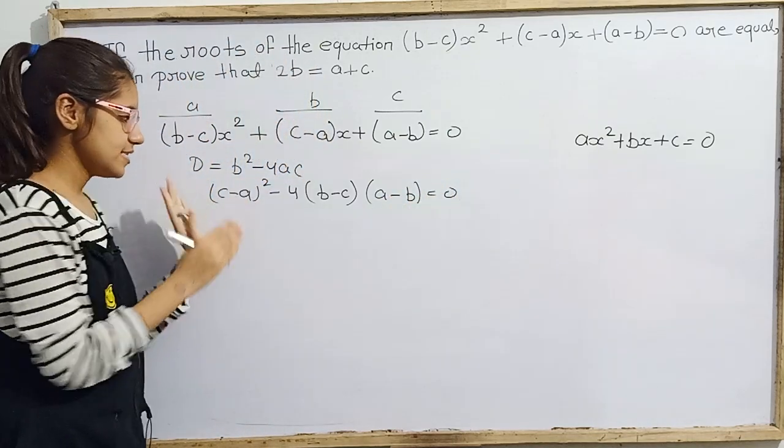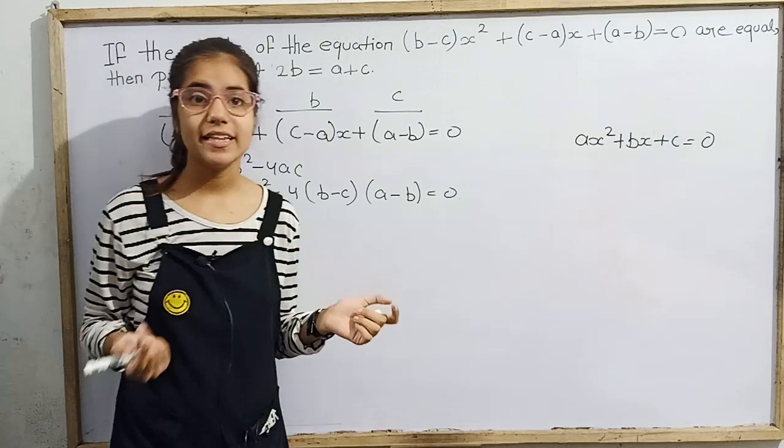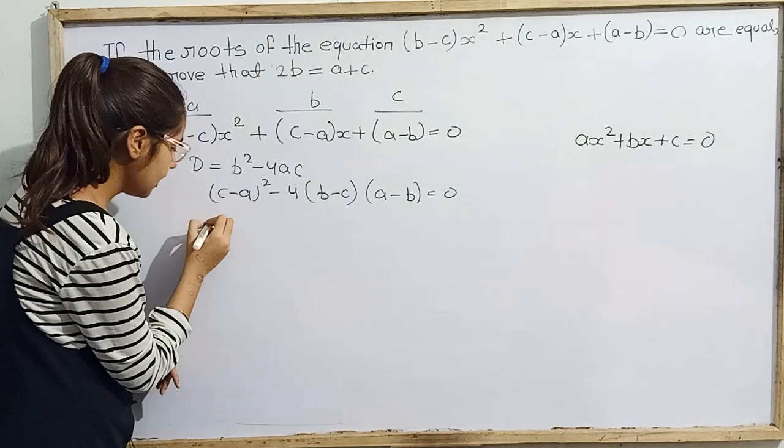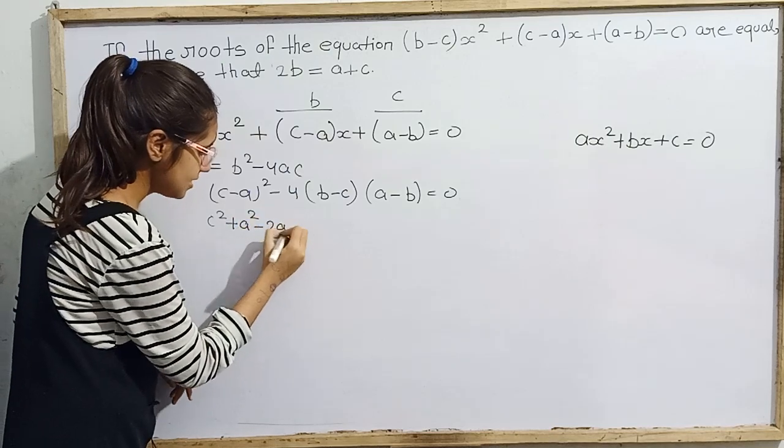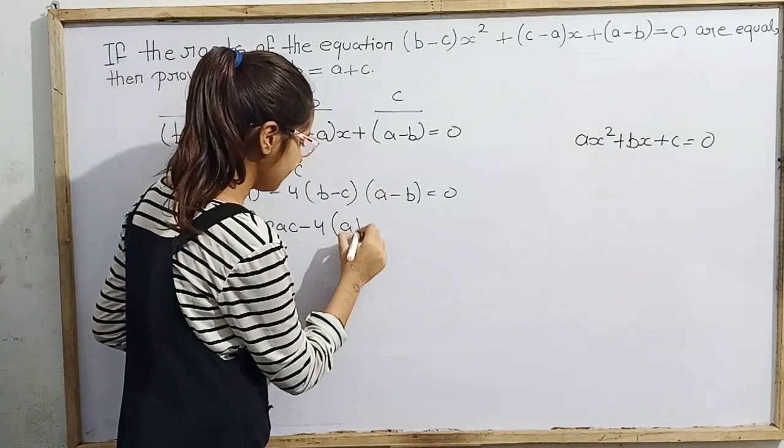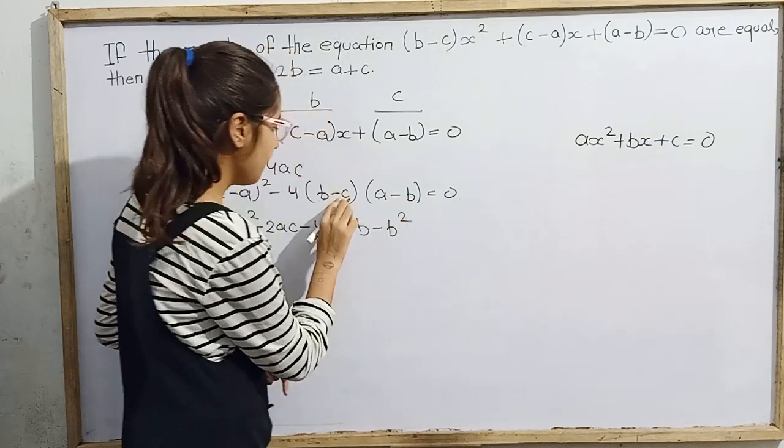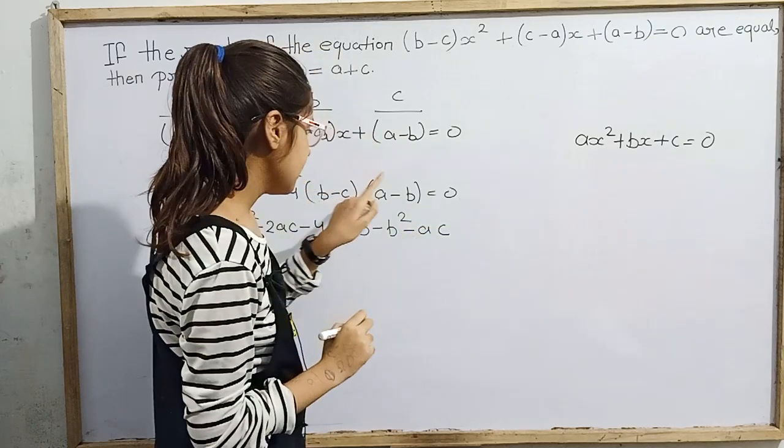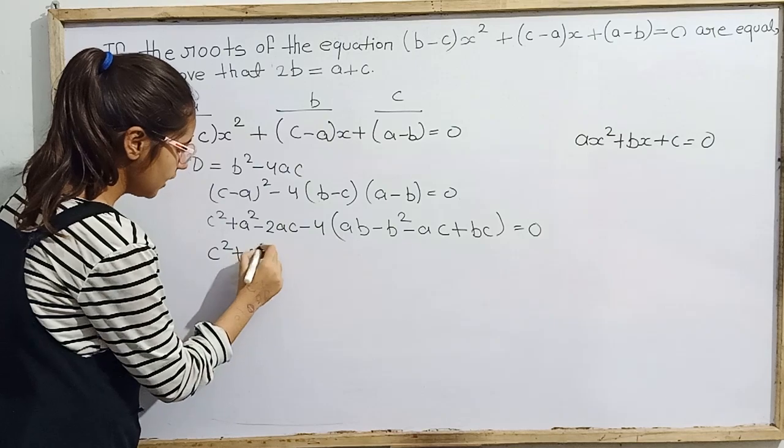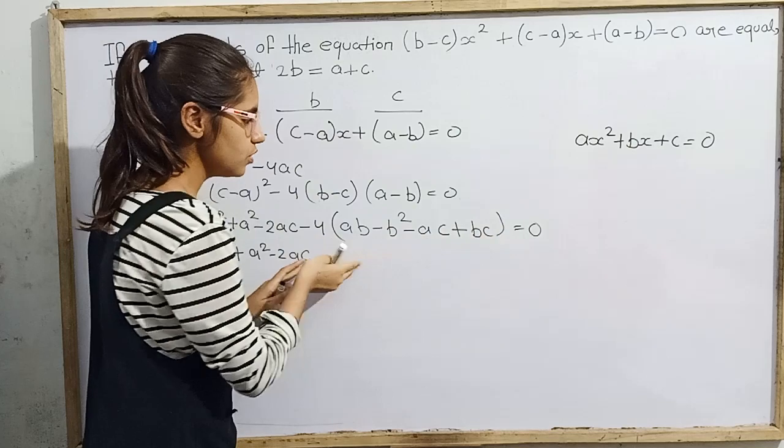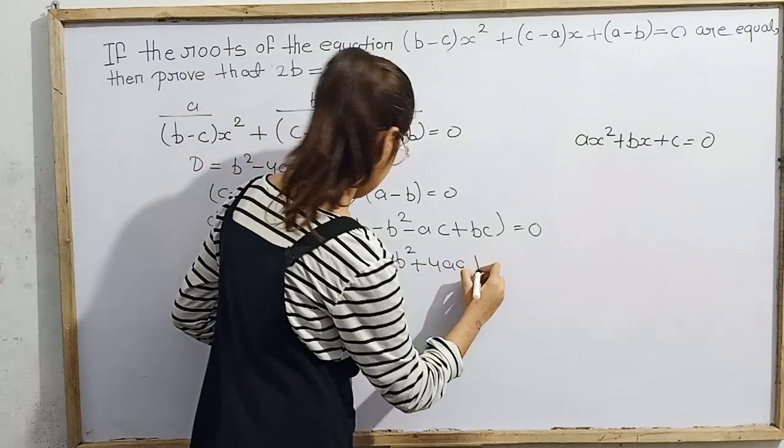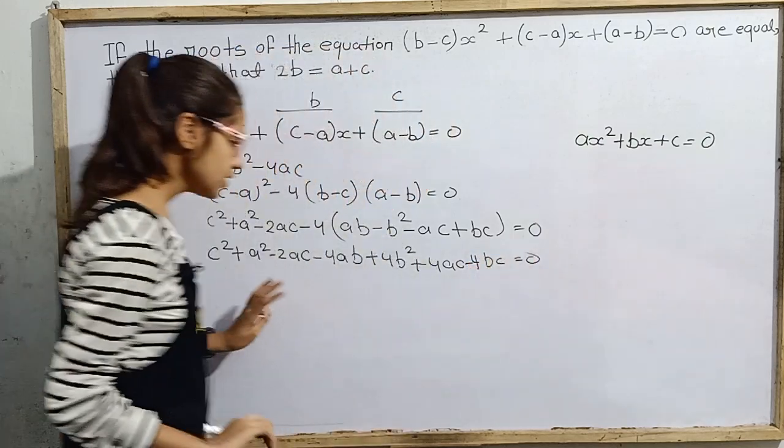Alright. Now here we can see. This is the form of c minus a whole squared. This is the form of a minus b whole squared. And its formula is a squared plus b squared minus 2ab. So only variables are changed. So what we will do here? It will be c squared plus a squared minus 2ac. Alright. Now this minus 4 as it is. And these two terms will multiply. So b into a that will be ab minus b squared. Minus c into a minus ac. Minus c minus b. That will be plus bc equals 0. Alright. Now c squared plus a squared. Like this we will write. And now this 4 will multiply to these terms. So it will be minus 4ab plus 4b squared plus 4ac minus 4bc equals 0.